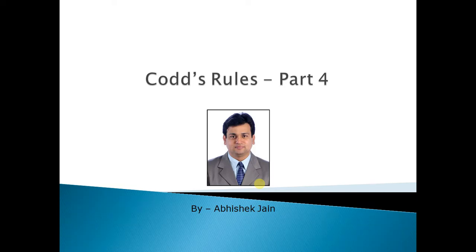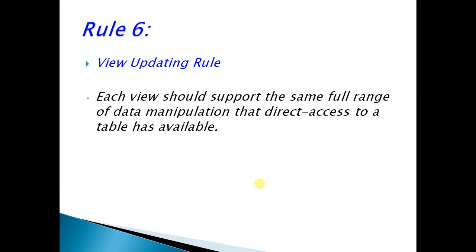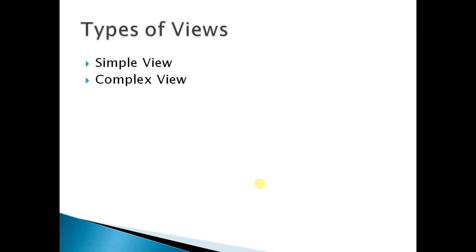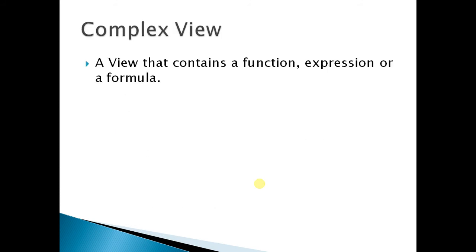I hope you have practiced by creating certain views. Now let us move to the main part of rule number six, which was the basis of rules. It says that a view should support the same type of DDL and DML operations just like a table. Whatever DML or DDL operations you can perform on a table should also be allowed on a view. We have seen that there are two types of views: simple and complex.